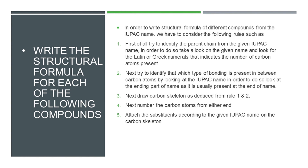When we have attached the substituents, then according to rule 6, whatever valences remain unfulfilled for the carbon atoms, we fulfill them with hydrogen atoms. So this is the set of rules we follow to go from name to structure. To recall: first, identify the number of carbon atoms; then identify the type of bonding; then draw the skeleton on paper; then number the carbons; then attach substituents at their respective carbon atoms.